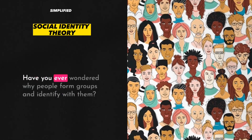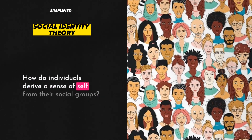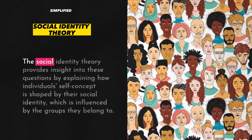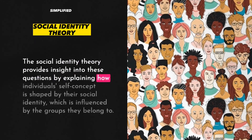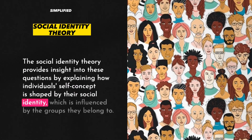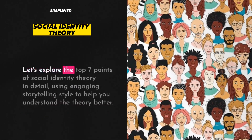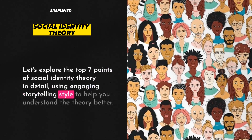Social Identity Theory. Have you ever wondered why people form groups and identify with them? How do individuals derive a sense of self from their social groups? The Social Identity Theory provides insight into these questions by explaining how individuals' self-concept is shaped by their social identity, which is influenced by the groups they belong to. Let's explore the top 7 points of Social Identity Theory in detail, using an engaging storytelling style to help you understand the theory better.